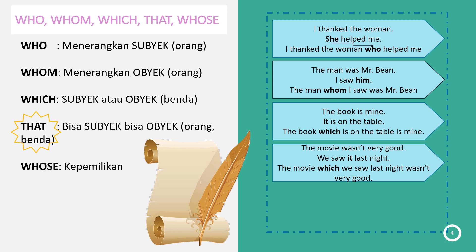Mari kita lihat contoh kalau kata bendanya itu object. Object berarti pakai 'which' juga. Contohnya: 'The movie wasn't very good. We saw it last night.' Yang mau diubah adalah 'it.' It di contoh keempat ini adalah object — kita melihat film itu, kita subject, saw it, film itu object. Yang kita mau terangin adalah movie-nya, object-nya. Jadinya: 'The movie which we saw last night wasn't very good.'